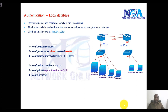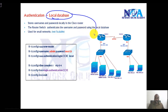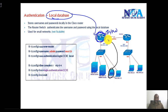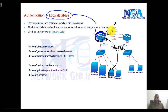Authentication using local database. With AAA authentication using a local database, we store the usernames and passwords on the local device. When any user tries to log into the device using Telnet or SSH, the router checks the local database and will allow the user to log in if the credentials match.